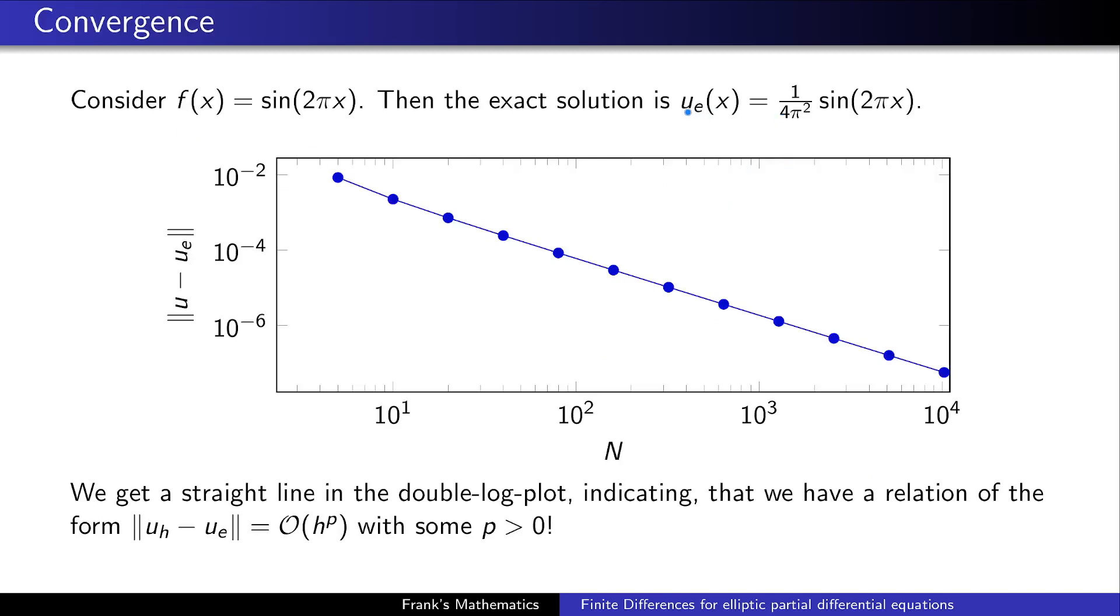This gives us the opportunity to draw this error log in a double logarithmic plot. On the y-axis you can see the difference of the computed solution u to the exact solution in a norm. The x-axis is the number of discretization points. You can see here we have a straight line in a double log plot, and this indicates that we have a relation of the following form. So ||u_h - u_e|| must be something like O(h^p) in Landau notation with some p greater than zero. This is super nice. In addition we see that we have convergence, at least for this example.